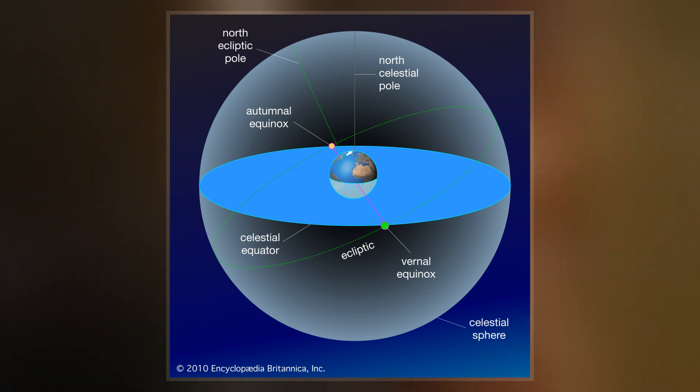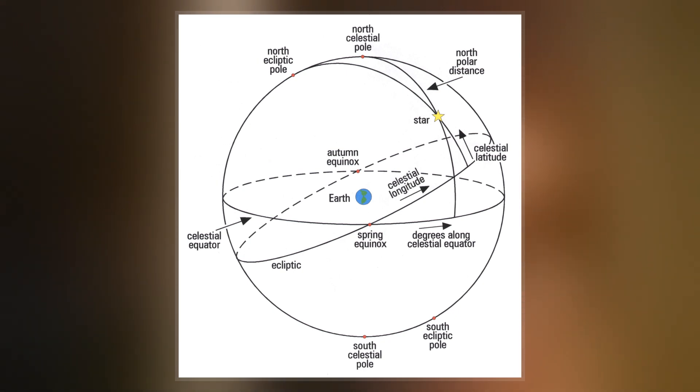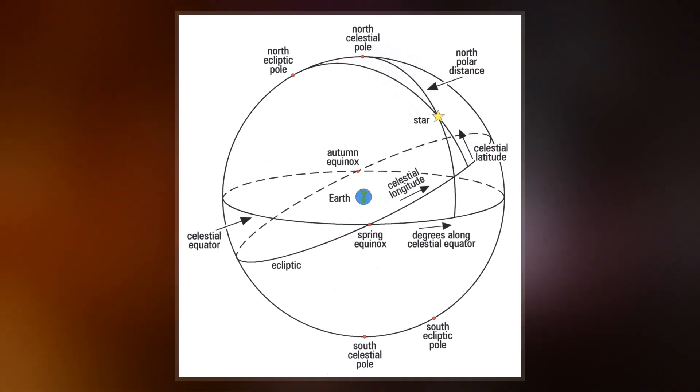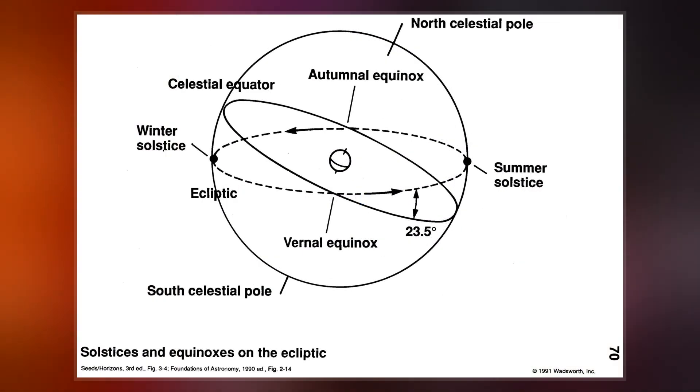The celestial equator is defined to be infinitely distant, thus the ends of the semicircle always intersect the horizon due east and due west, regardless of the observer's position on Earth.